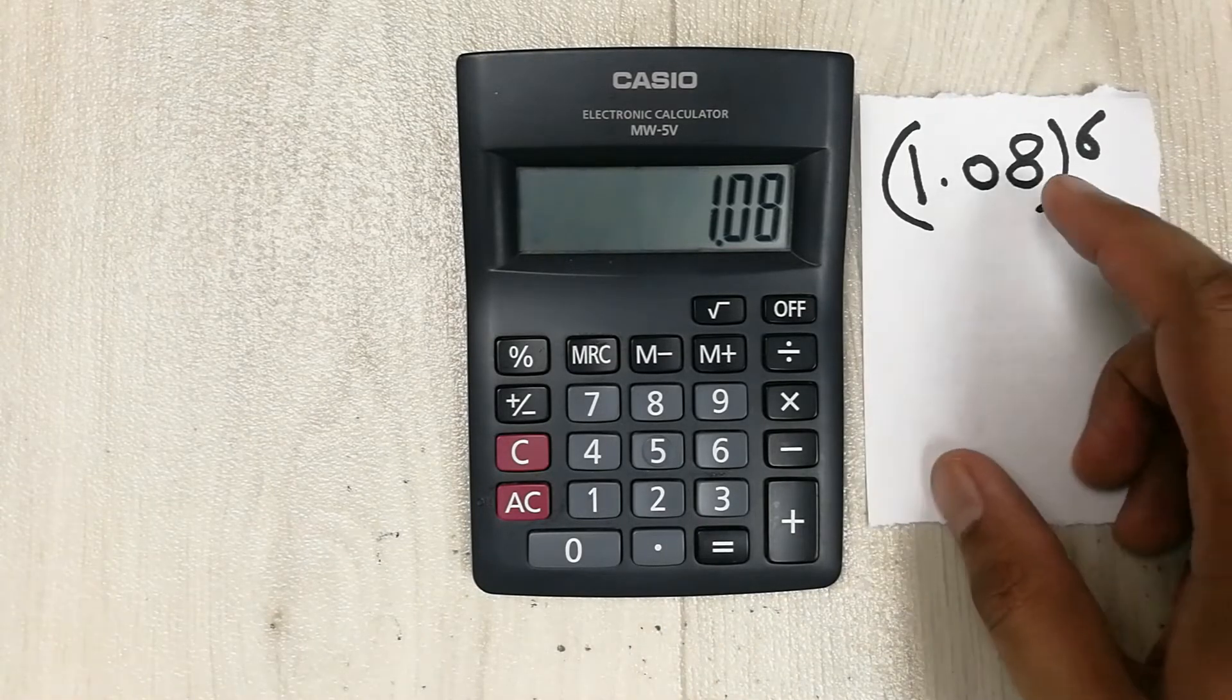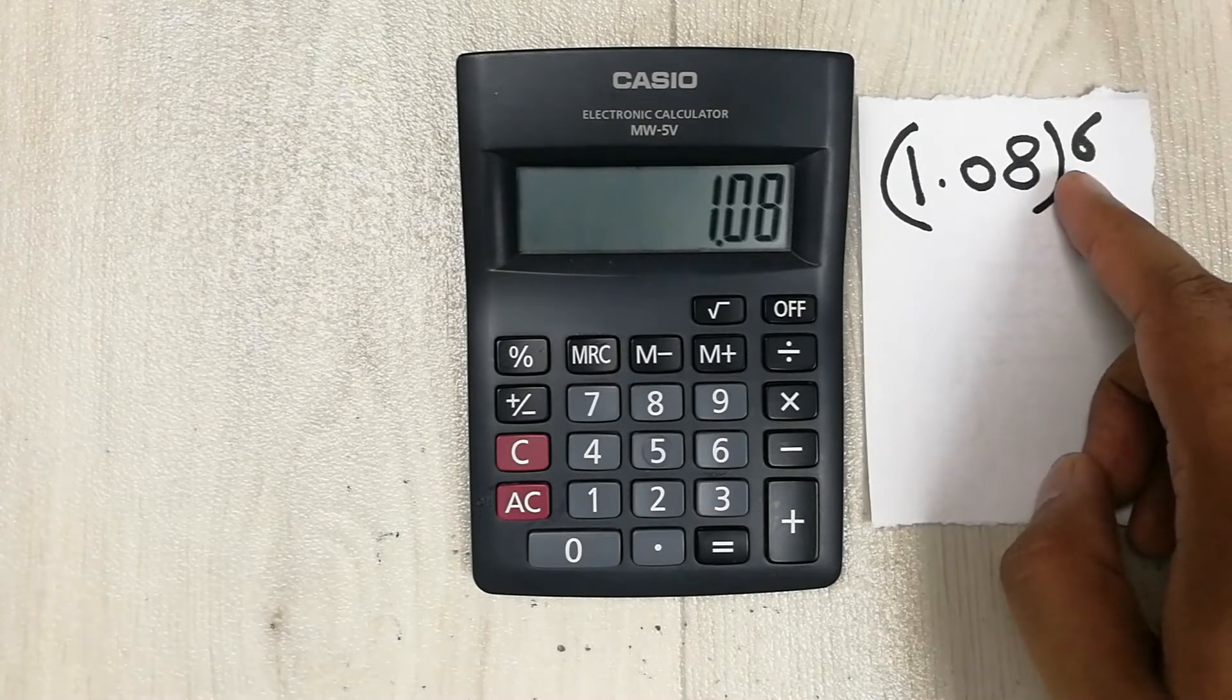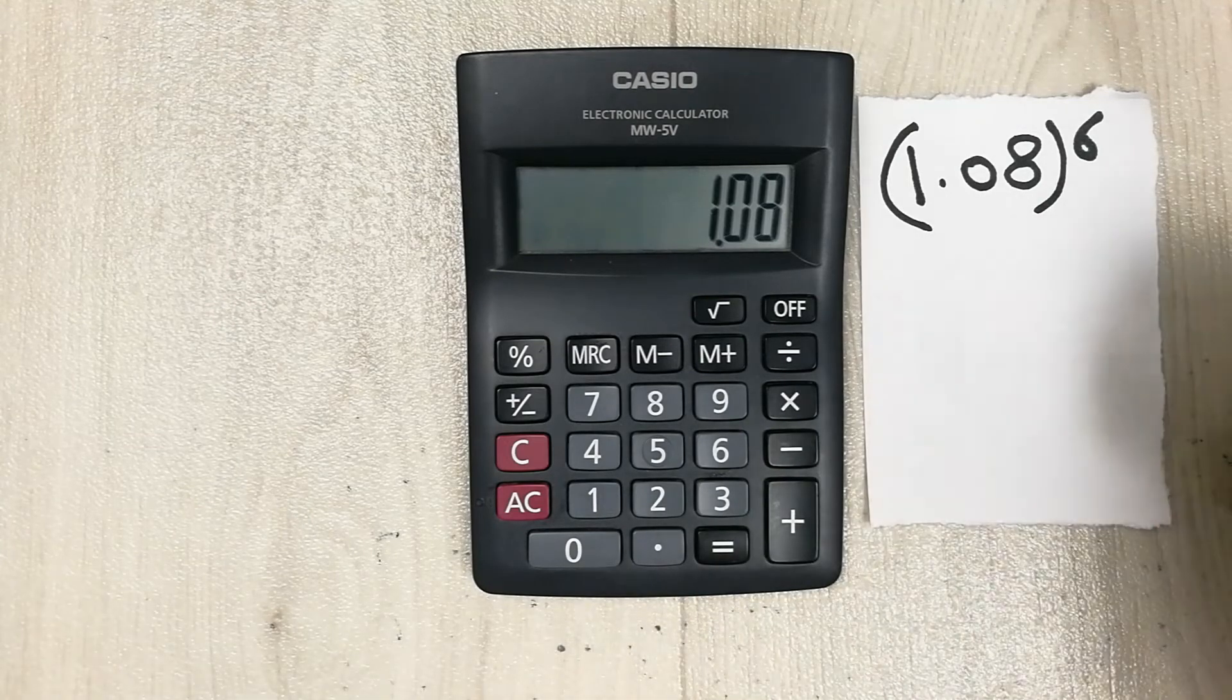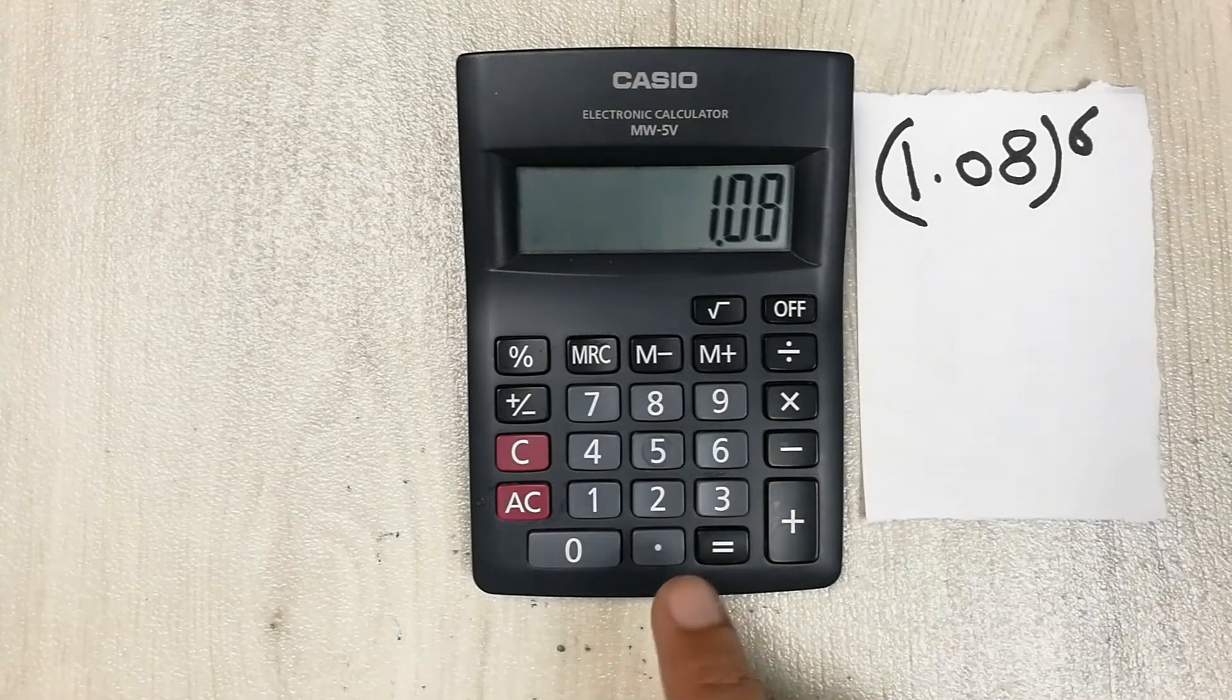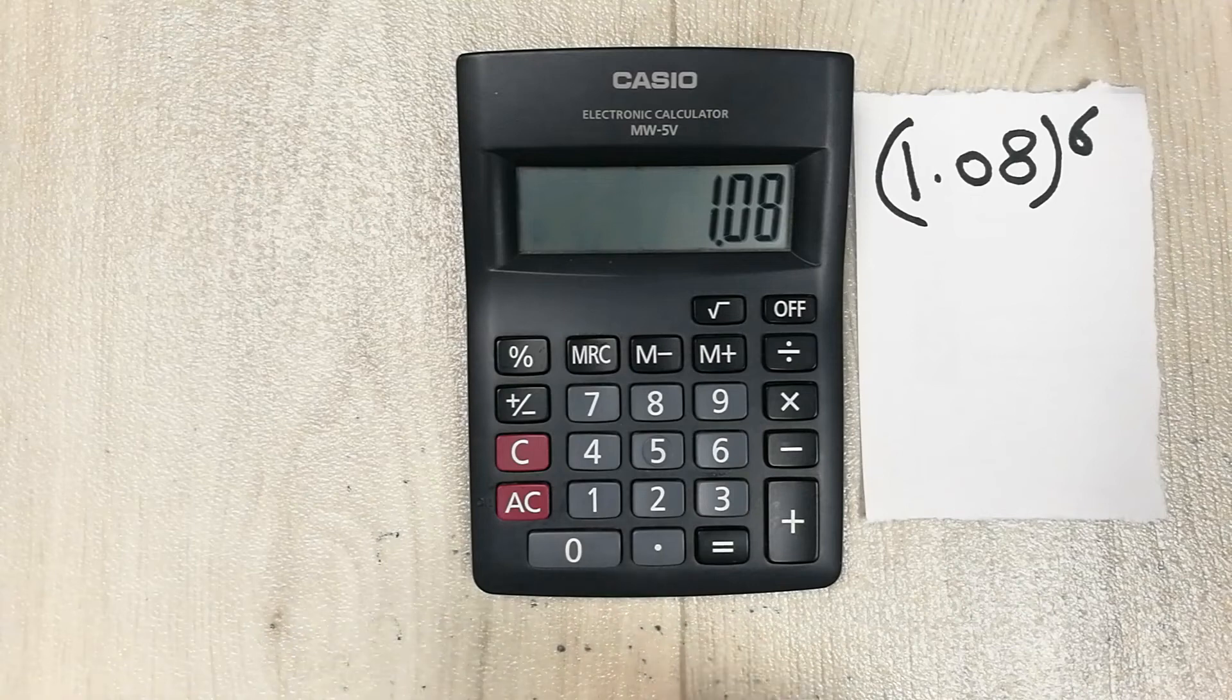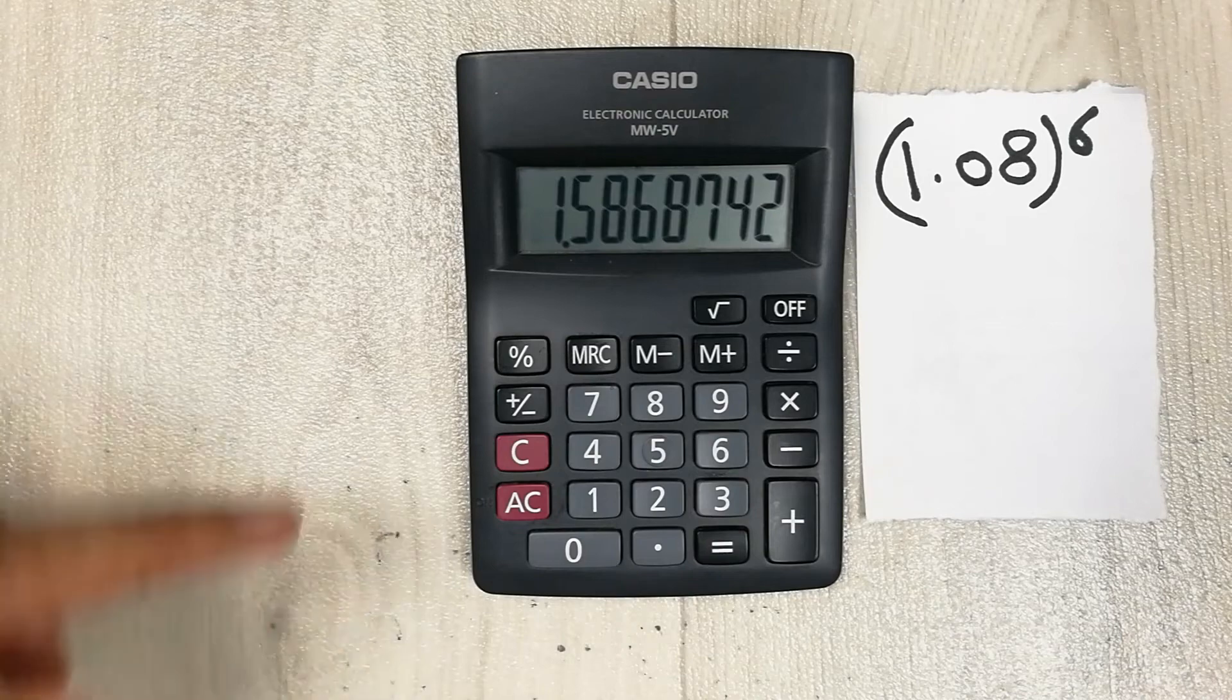Okay guys, as I already mentioned, whatever power you have here, you have to minus it with one. Whatever answer comes, you have to press that equal button for that specific time. So here we have six, it means we have to press this equal button five times, one time less. Okay, so five times: one, two, three, four, five.